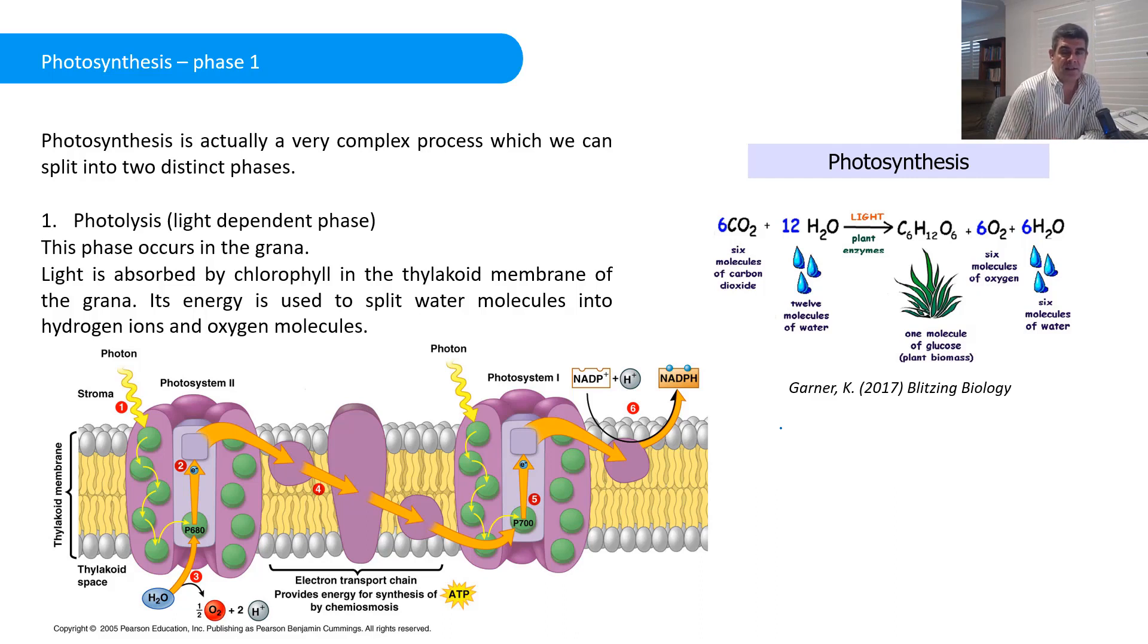Photosynthesis is carried out in two distinct phases. Again, there are more steps involved here than we're going to deal with, but we're going to at least try and see if we can look at the two key phases of photosynthesis and what's actually going on in each one. The equation here which I've borrowed from Blitzing Biology has a really interesting way of representing the equation for photosynthesis.